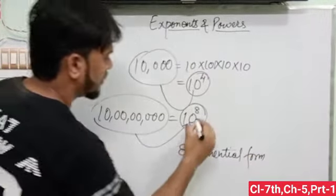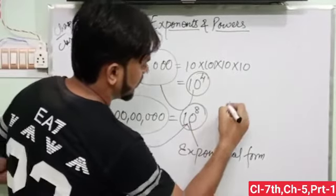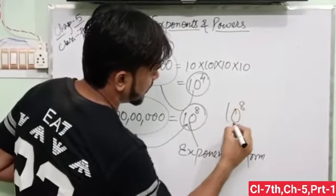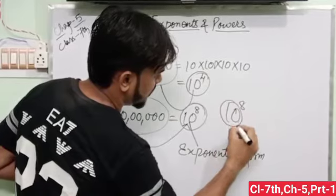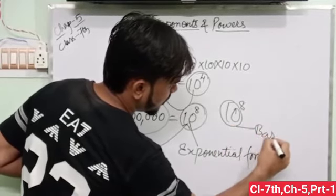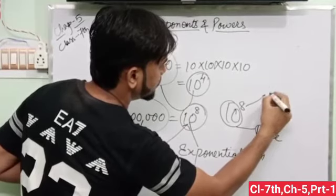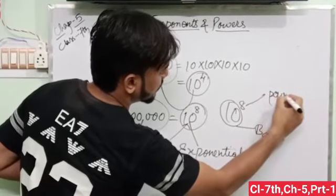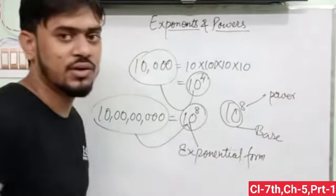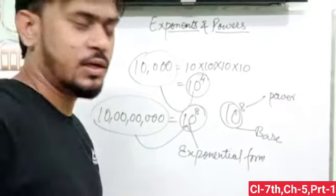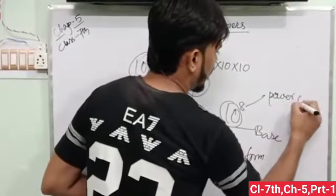Exponent has two parts. 10 to the power 8. So today, this part is called base and this is called power. It is called power. All right.